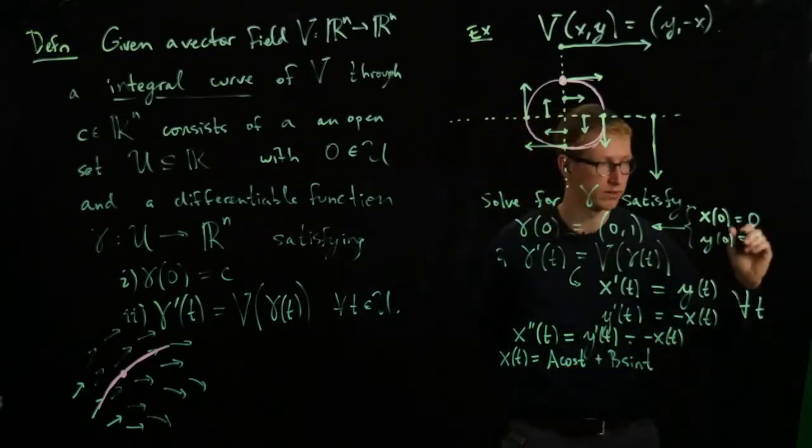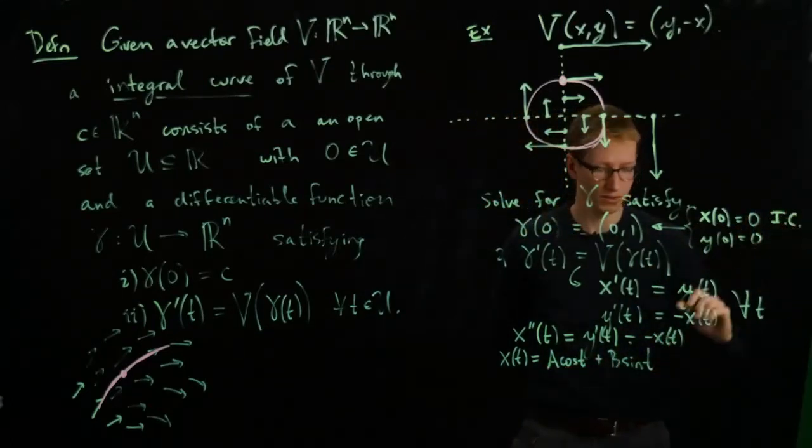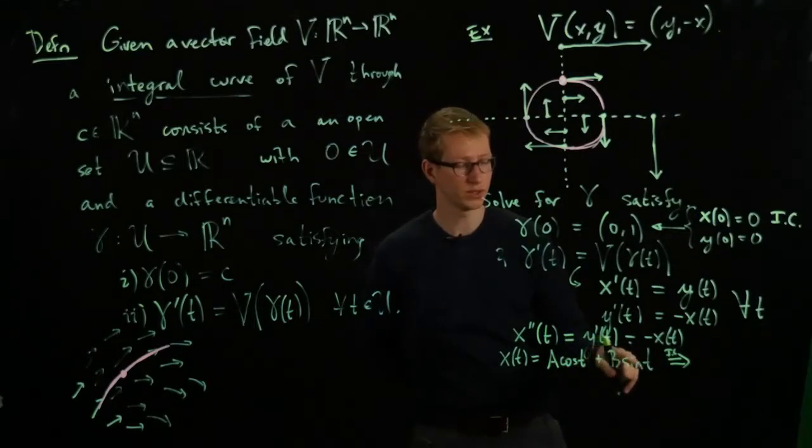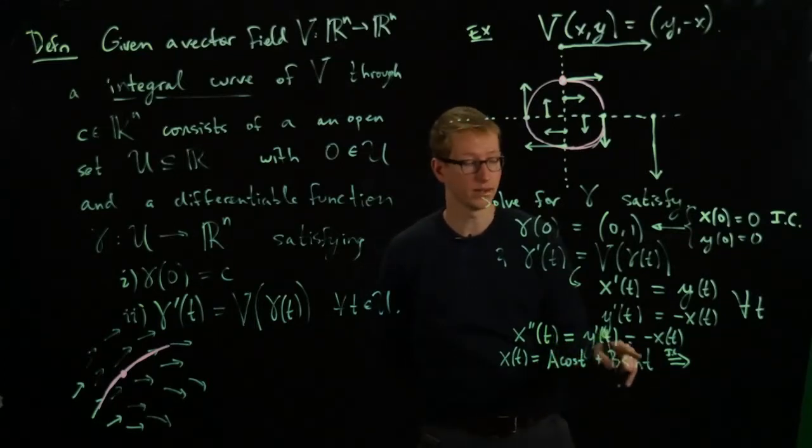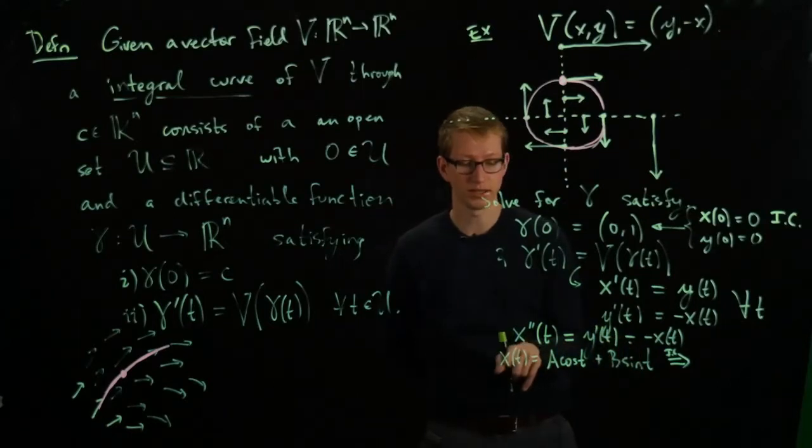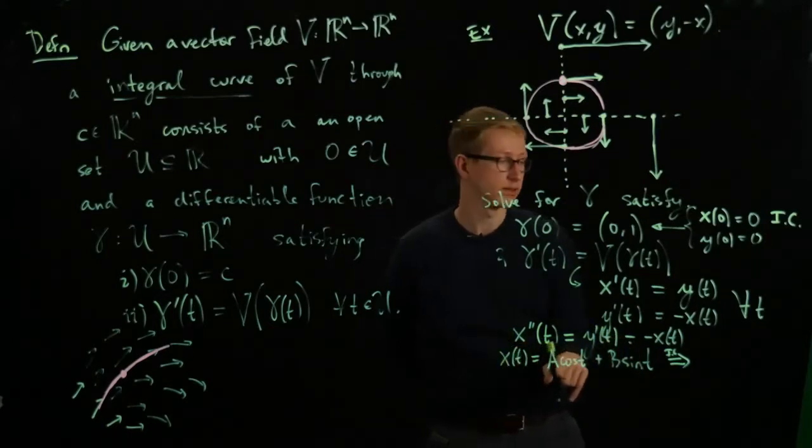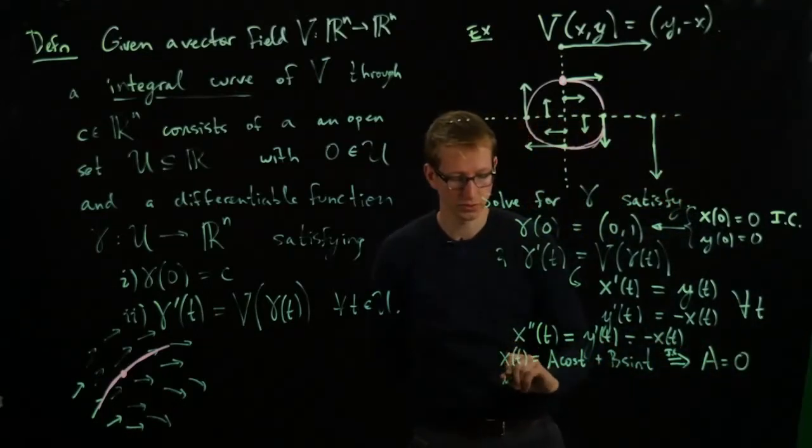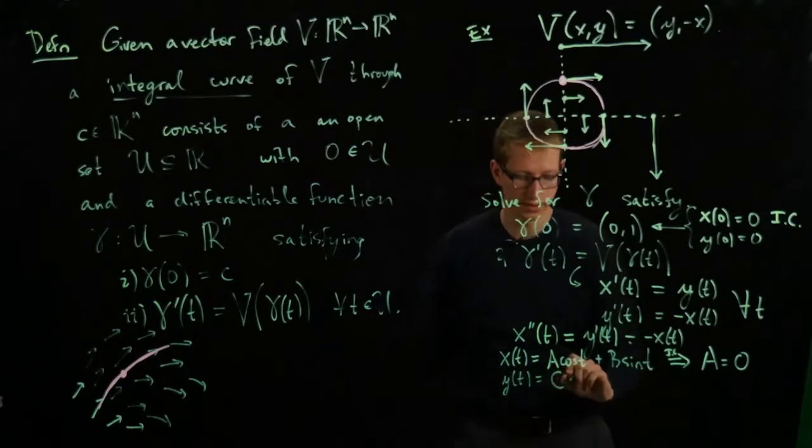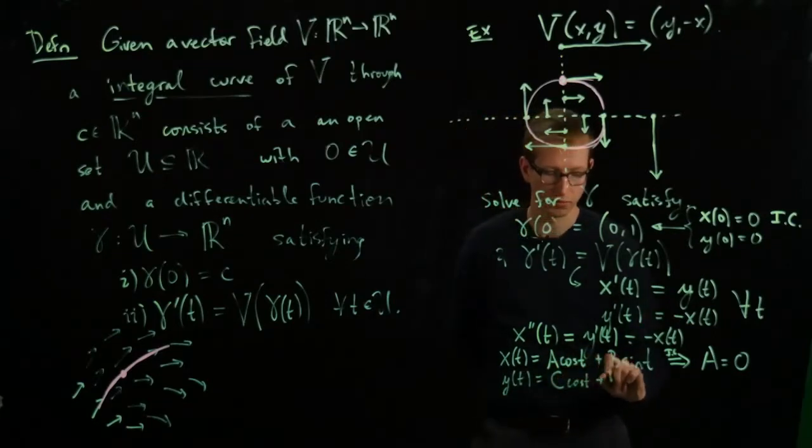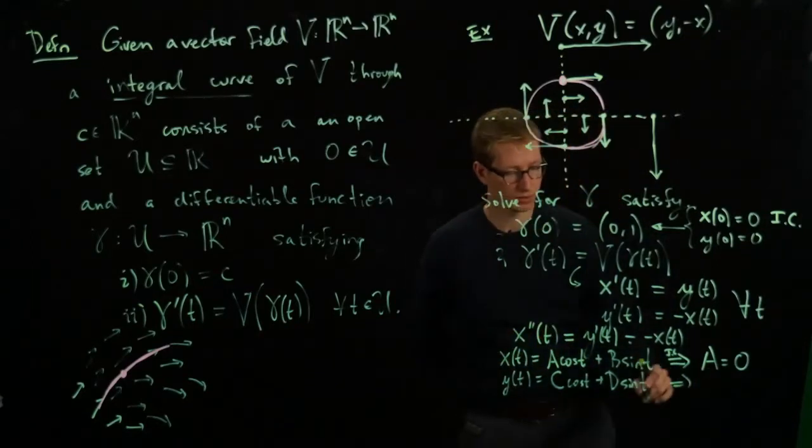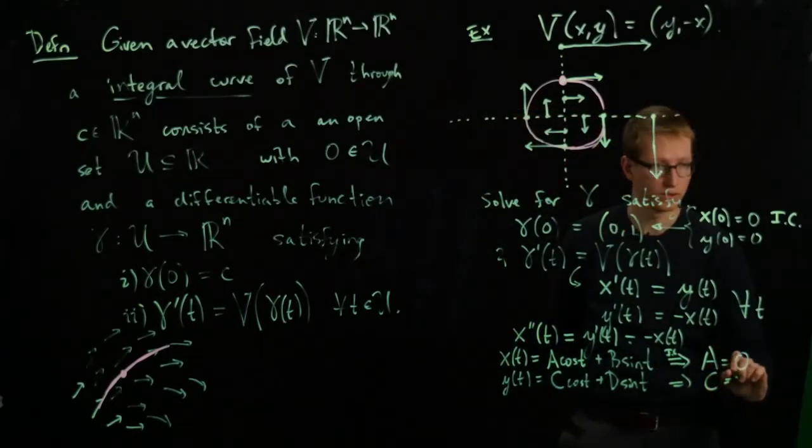Now the question is how do we actually use our initial conditions here? We know that at x(0), we get 0 back. So this initial condition implies that one of these coefficients is 0. When we plug in t equals 0, cosine is 1, and then sine is 0, so we get the condition 0 equals a. This implies that a equals 0. Similarly, we'll have y(t) equals c*cos(t) plus d*sin(t). And this implies that c equals 0.